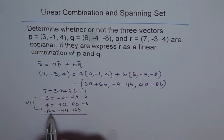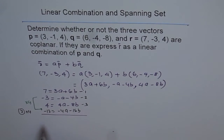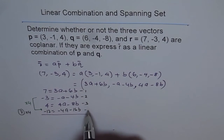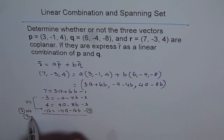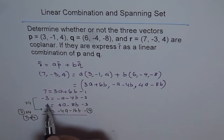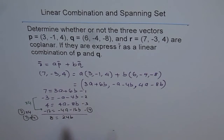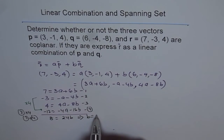We add equation 3 and equation 4 to eliminate A. Adding them gives 8 = -24B — wait, we get 8 equals 16 + 8, which is 24B — so adding gives 8 = 24B, which gives us B equals 8 over 24, which is 1 over 3.